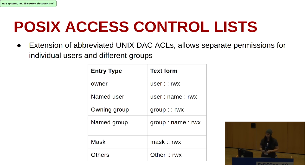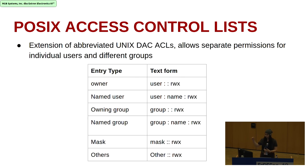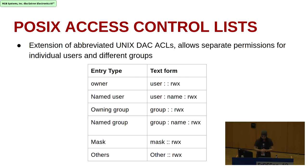The entry types in an ACL include: owner, with RWX access rights; named user, where you specify a username and its RWX access rights. An ACL consists of a list of entries, and the permissions of each file system object can have ACL representation. These access control lists are managed by the setfacl and getfacl commands in the Linux kernel.